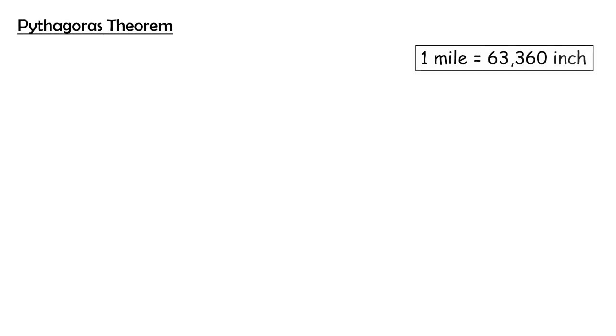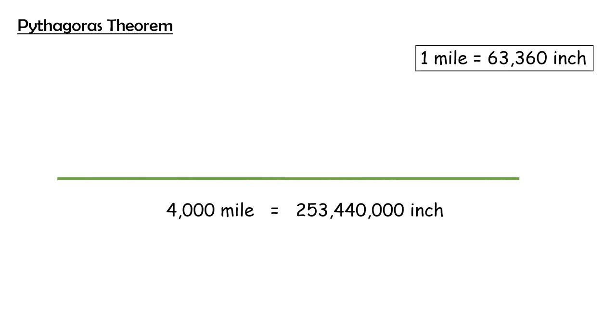1 mile is equal to 63,360 inches. The total length of the handrail is 4000 miles which would be equal to 253,440,000 inches. Now, half of the total length would be 126,720,000 inches.